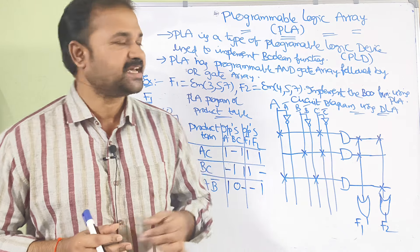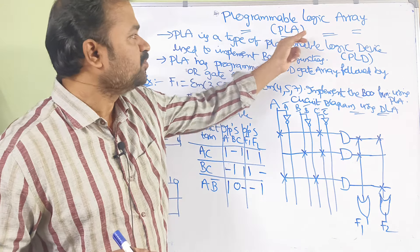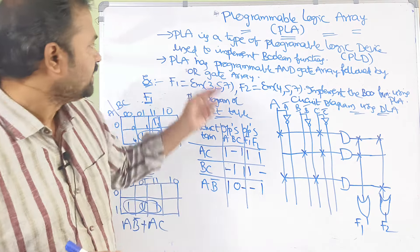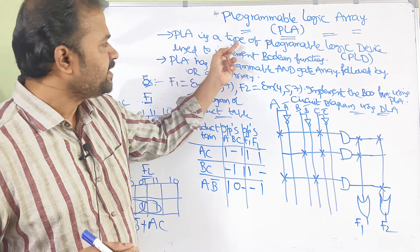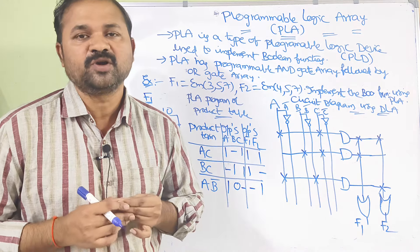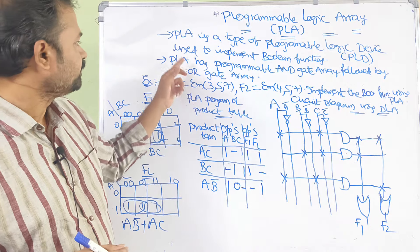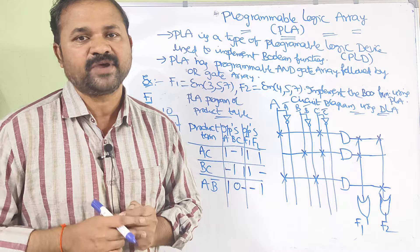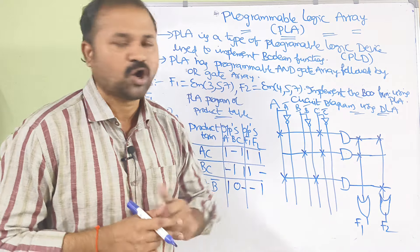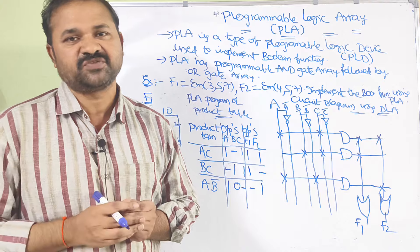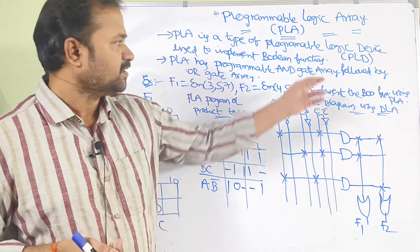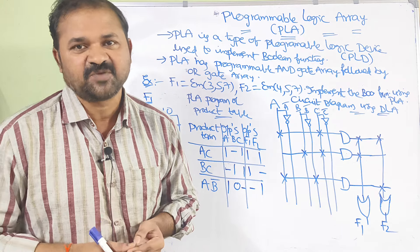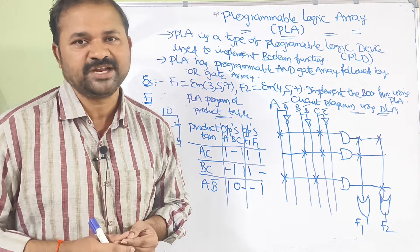Now let us discuss about Programmable Logic Array, in short we can call it PLA. PLA is a type of Programmable Logic Device, that is PLD, used to implement boolean functions. Using a Programmable Logic Device we can do some programming on devices — like addition operation, subtraction operation, swapping operation. We can do any logic.